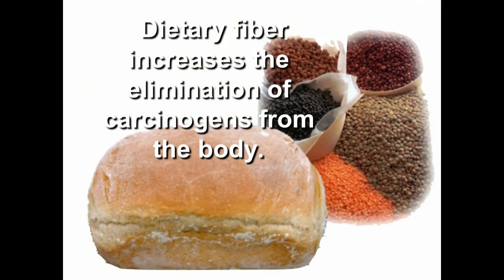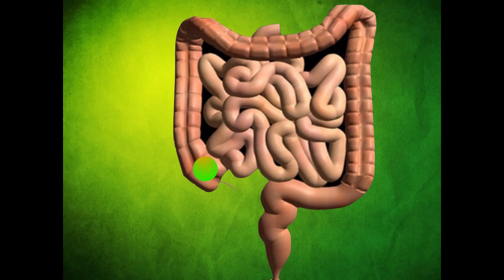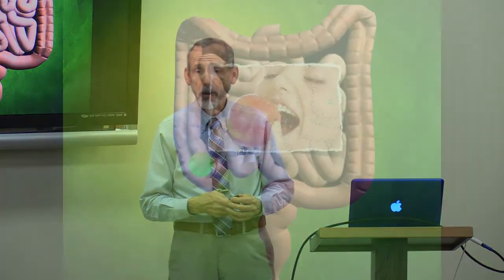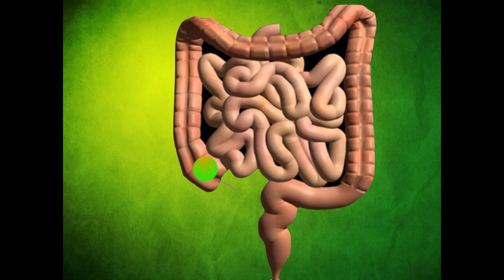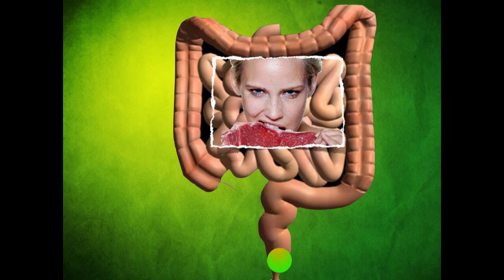Dietary fiber increases the elimination of carcinogens from the body. The transit time — the amount of time it takes food to go from your mouth to the rectum — for a vegetarian is measured in hours: 18 to 30 hours. That's good, because if almost everything is toxic today, the less contact it has with your digestive system, the less chance carcinogens have to pass into your body. A person on a meat-based diet has transit time measured in days — three, four, five, six, seven days. That's what we call constipation.